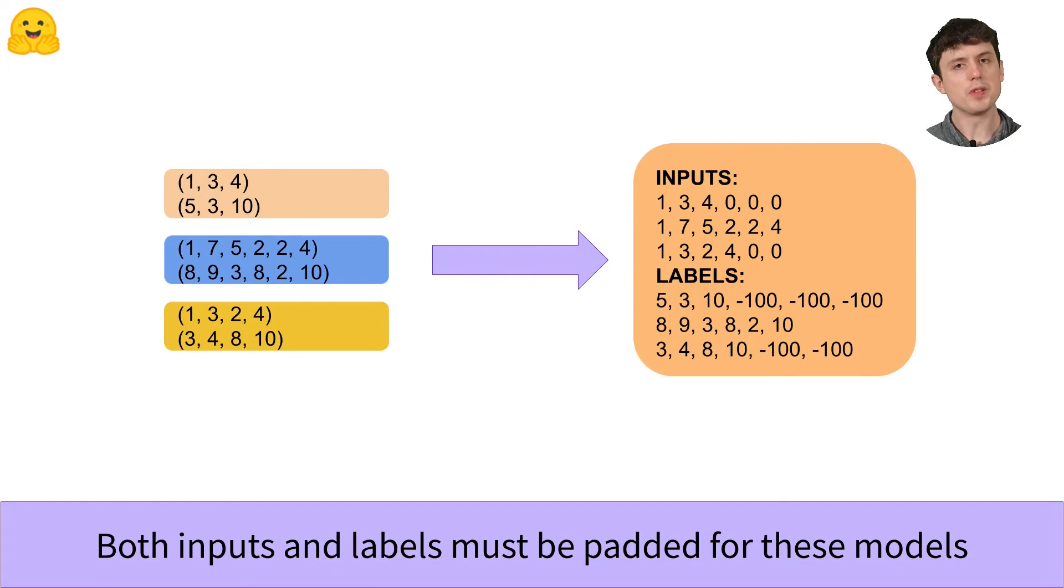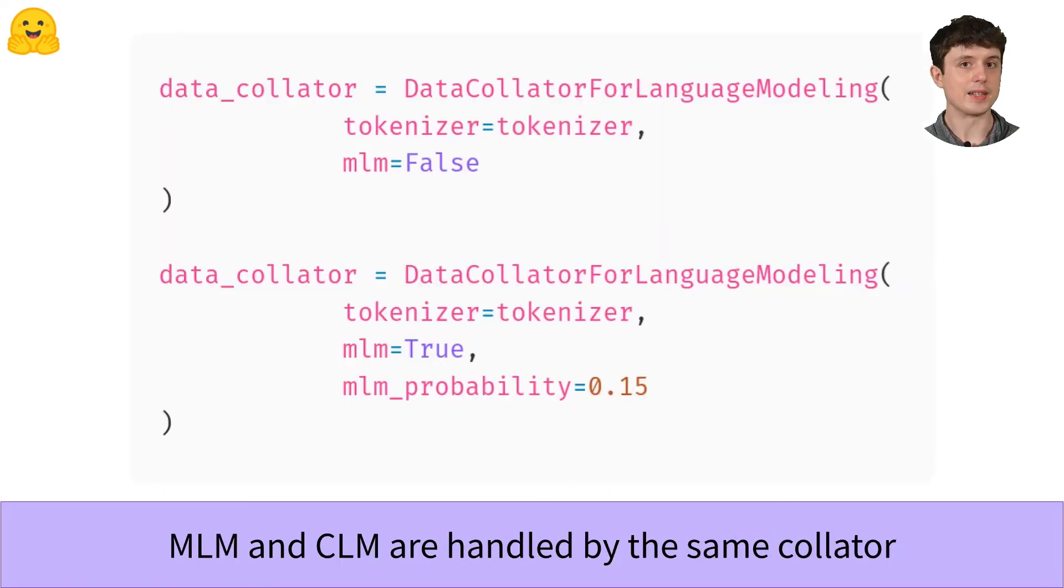So there's one final data collator I want to show you in this lecture and that's the DataCollatorForLanguageModeling. It's very important firstly because language models are just so foundational for everything we do with NLP these days. But secondly because it has two modes that do two very different things.